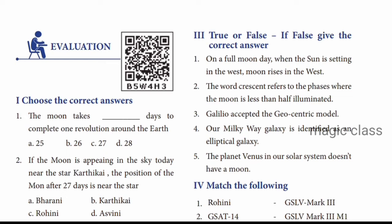Question number 2: The word crescent refers to the phase where the moon is less than half illuminated. The answer is true. Crescent is when the moon is less than half illuminated. When the moon is more than half illuminated, that is called gibbous.